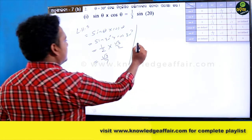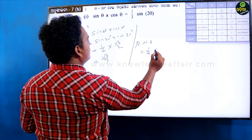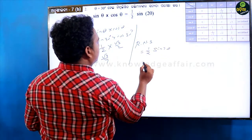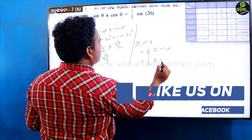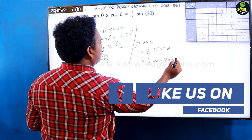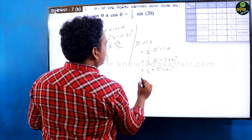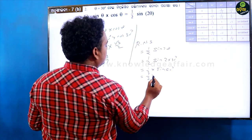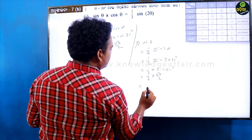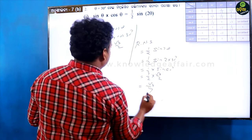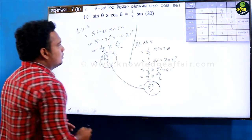Similarly, RHS is equal to 1 by 2 sin 2 theta, which gives sin 60 degrees. Sin 60 value is root 3 by 2, so the final answer is root 3 by 4. So LHS is equal to RHS — proved.